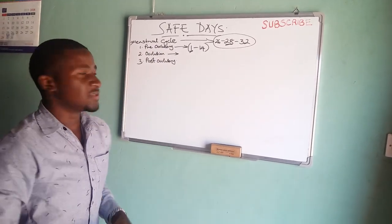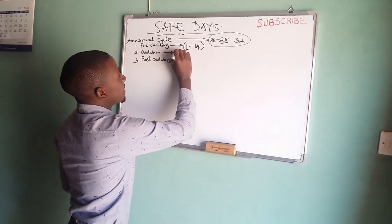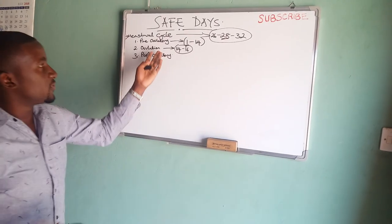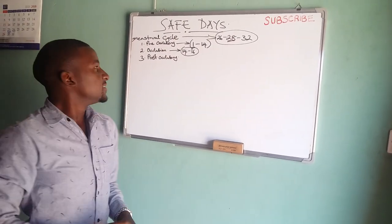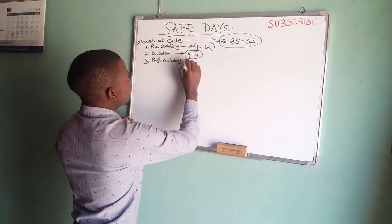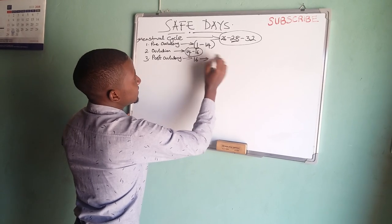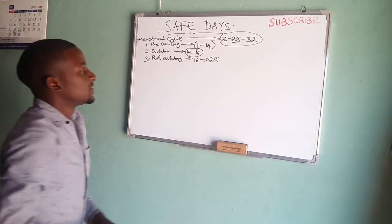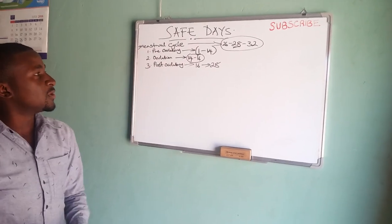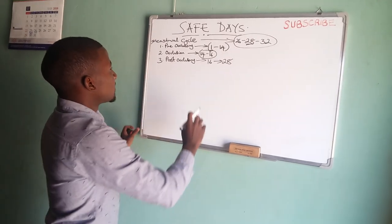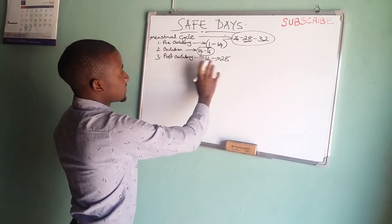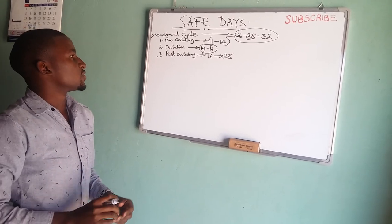At ovulation, the egg is released into the fallopian tubes. Ovulation happens around the 14th to the 16th day — that is the period when the egg is viable and can be fertilized by the sperm. Then we have the post-ovulatory phase, which continues from the 16th to the last day, which might be the 28th, in the case of a 28-day cycle. There are a lot of hormones involved, but we won't talk about that today — we shall cover that next time.